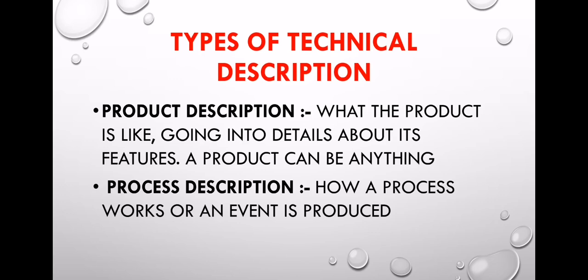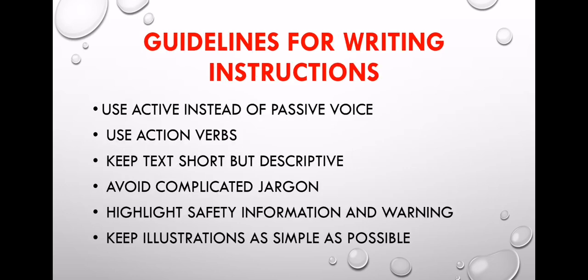In terms of the details and features, the product description covers everything about the product. The second type is process description, which describes how your process works or how an event is produced. A process description includes a brief overview and describes how the process works step by step.